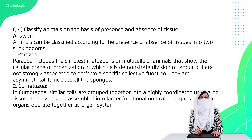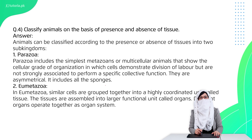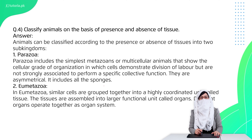Question 4 is: classify the animals on the basis of presence or absence of tissue. Parazoa are multicellular but don't have any tissue formation — all sponges belong here. Metazoa are organisms where cells develop into tissues and these tissues create organs.